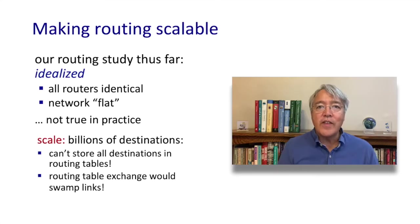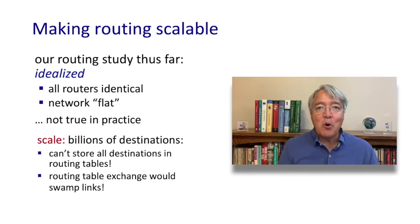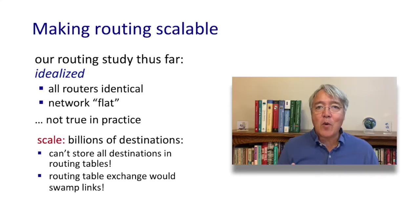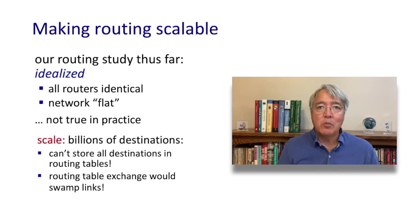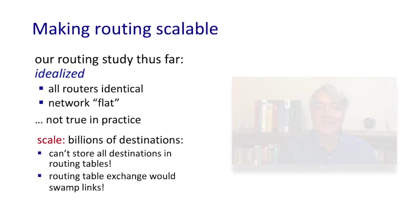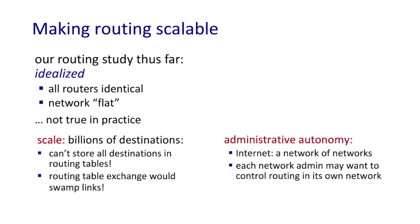A router's forwarding table couldn't possibly hold a billion forwarding entries for all destination hosts. Similarly, a routing algorithm exchanging distance vector or link state information with millions of other entities just isn't scalable — it would use up all the bandwidth in the network just for control purposes.